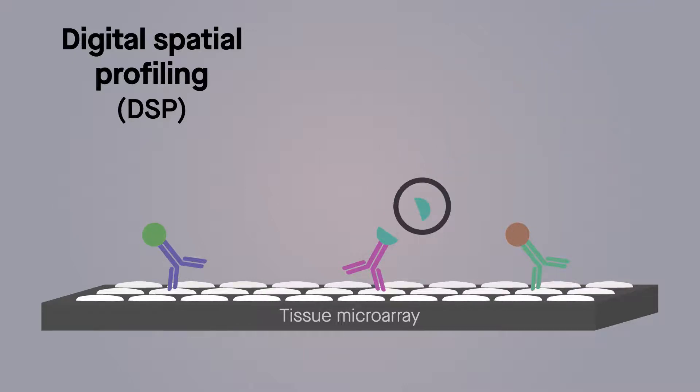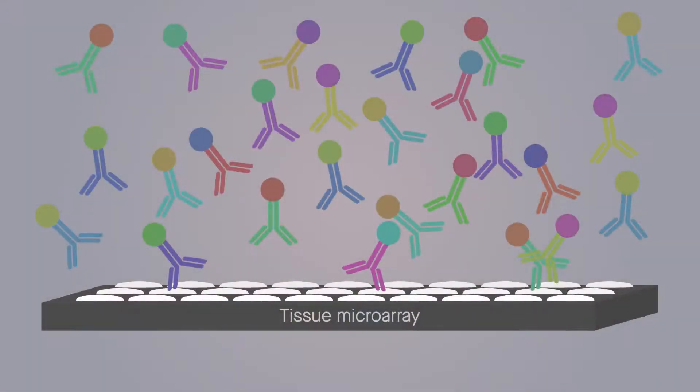The tiny molecular tags are then siphoned out and analyzed, and the result is a detailed, quantitative map of antibody interactions across different tissue structures.